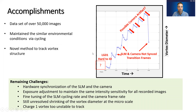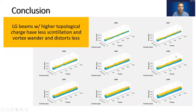In terms of our accomplishments, we have a really rich data set and will continue to explore and mine it over the coming months. We believe we succeeded in creating an environment where different beams were subject to similar turbulence levels, and we are proud of this novel method to track the vortex. There are still some issues to resolve in future experiments, many related to synchronizing the SLM and the camera during high-speed data capture. In conclusion, beams with higher topological charges have less scintillation, less vortex wander, and less distortion in vortex shape and size. This implies those beams are better candidates for basis beams in our communication system, as they are less influenced by optical turbulence and therefore more easily recognized by machine learning. We leave you with this visualization of the different beams over time and how their vortices evolve.